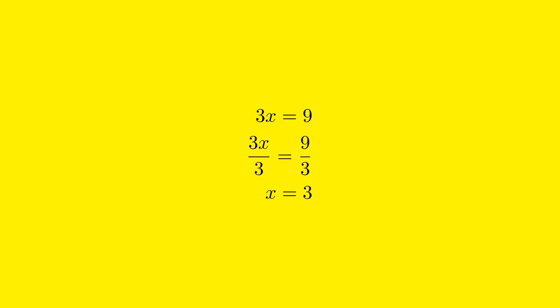Whatever operation we do to one side, we must also do to the other side to keep the equation balanced. So we also divide the right side by 3, giving us 9 divided by 3. When we perform the division on the left side, 3x divided by 3 simplifies to just x. On the right side, 9 divided by 3 equals 3. So now our equation simplifies to just x equals 3. This is the final step in solving the equation, because we have successfully isolated the variable x and discovered that x equals 3.